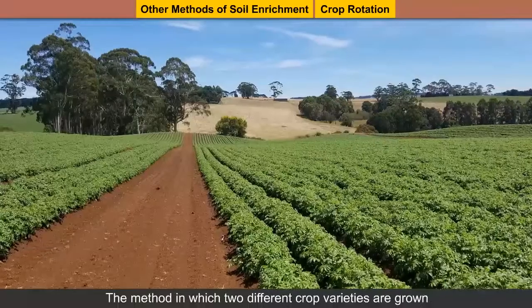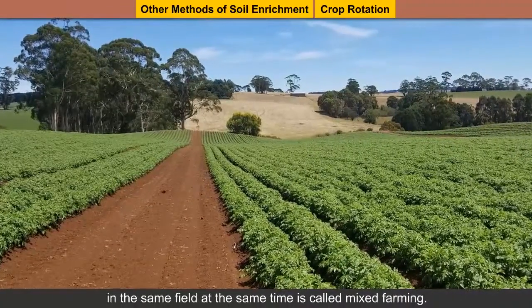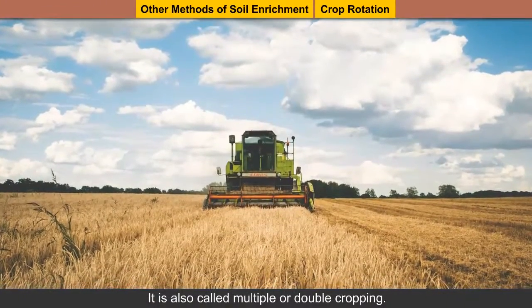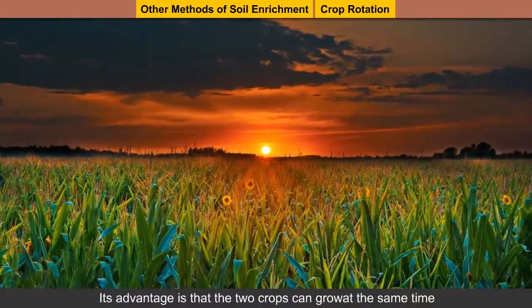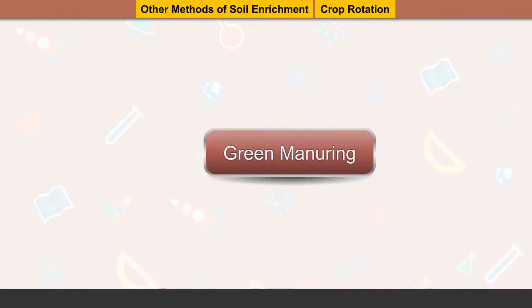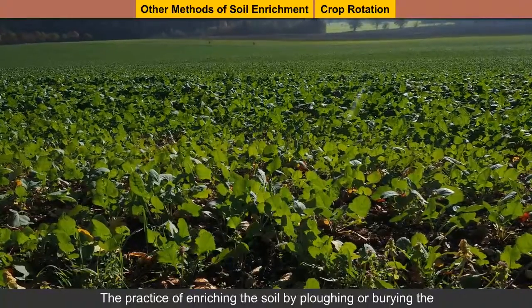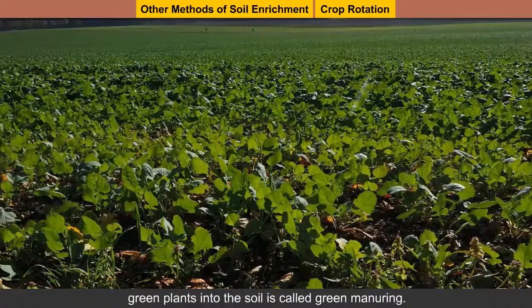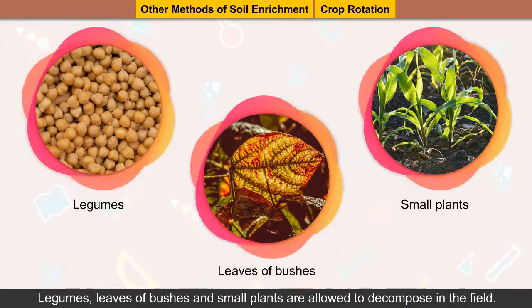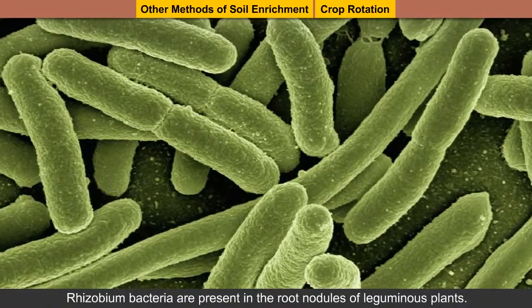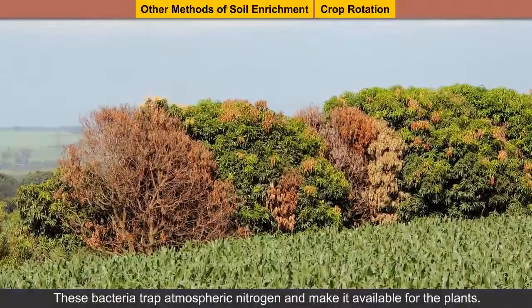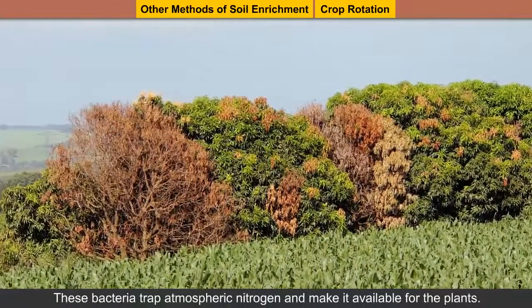Mixed farming: The method in which two different crop varieties are grown in the same field at the same time is called mixed farming. It is also called multiple or double cropping. Its advantage is that the two crops can grow at the same time and labor to harvest them is also less. Green manuring: The practice of enriching the soil by plowing or burying green plants into the soil is called green manuring. Legumes, leaves of bushes and small plants are allowed to decompose in the field. Rhizobium bacteria are present in the root nodules of leguminous plants. These bacteria trap atmospheric nitrogen and make it available for the plants.